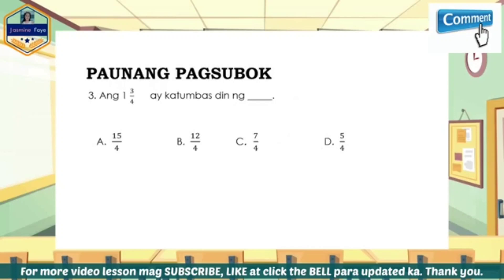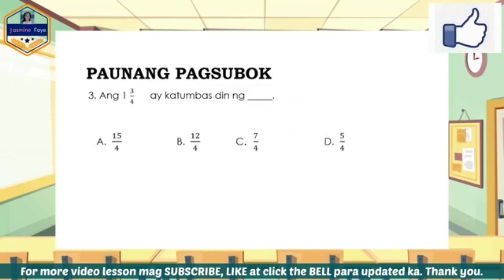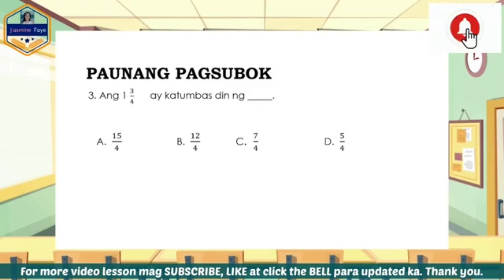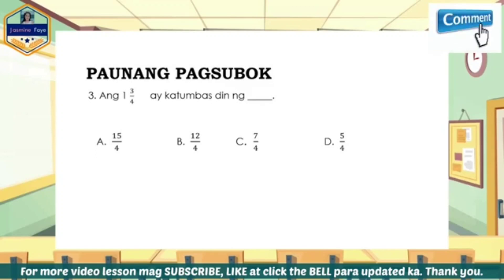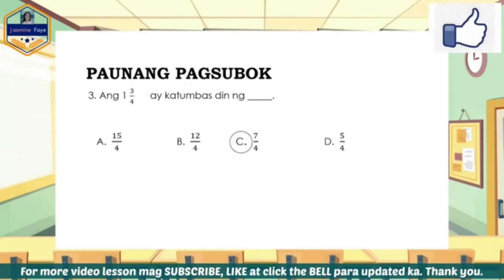Ikatlong bilang: ang 1 and 3 fourths ay katumbas din ng A. 15 fourths, B. 12 fourths, C. 7 fourths, D. 5 fourths. Ang tamang kasagutan ay letter C.